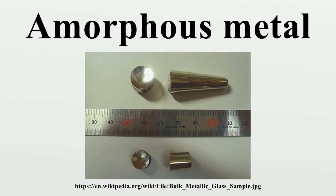The non-crystalline structure does not have any of the defects that limit the strength of crystalline alloys. One modern amorphous metal, known as Vitreloy, has a tensile strength that is almost twice that of high-grade titanium. However, metallic glasses at room temperature are not ductile and tend to fail suddenly when loaded in tension, which limits applicability in reliability-critical applications, as impending failure is not evident. Therefore, there is considerable interest in producing metal matrix composite materials consisting of a metallic glass matrix containing dendritic particles or fibers of a ductile crystalline metal.